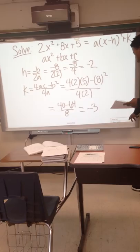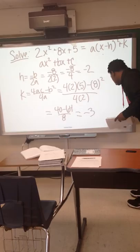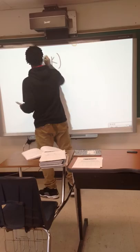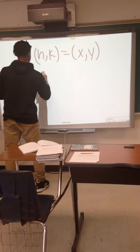So your vertex would be, because h goes before k, h equals x and k equals y. So your h is -2, and your k is -3. So this is your vertex.